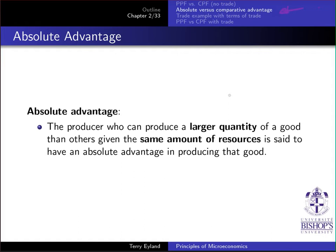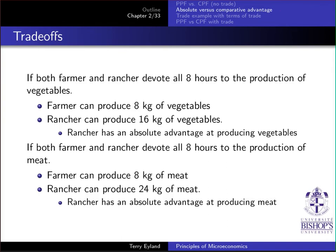The same amount of resources could mean the same number of workers, the same amount of time, or the same amount of energy. In this example, both the farmer and the rancher devote the same 8 hours. If both devote all 8 hours to vegetables, the farmer produces 8 kg and the rancher produces 16 kg. Therefore, the rancher has an absolute advantage in producing vegetables.